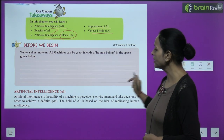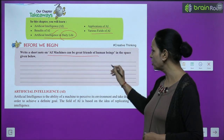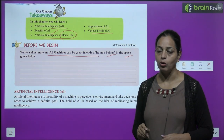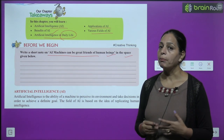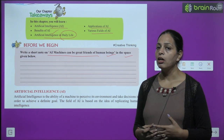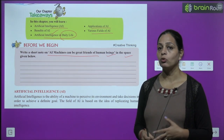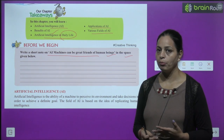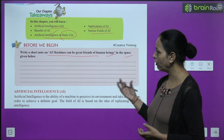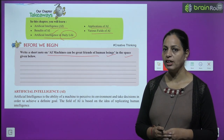Before we begin, write a short note on 'AI machines can be great friends of human beings' in the space given below. Hum apni language mein bata sakte hain — kya humare friends kaise ho sakte hain, humare problems solve kar sakte hain, information chahiye toh dhundne mein help karenge, accurate form mein, within few seconds. We can write a short note on AI means Artificial Intelligence.